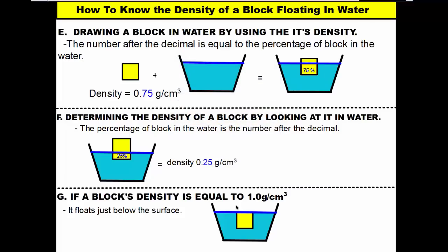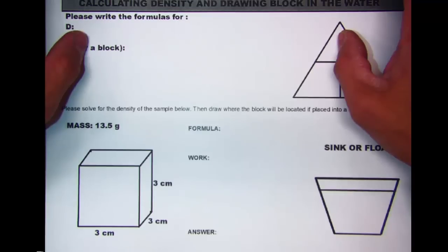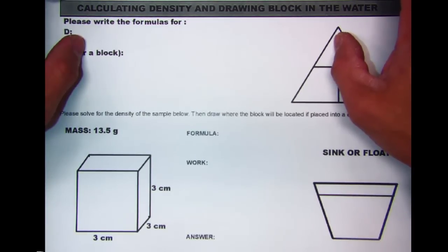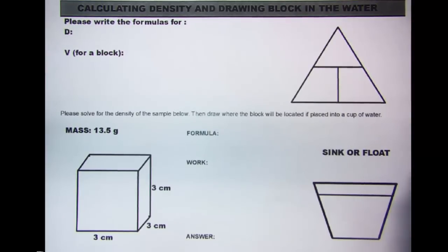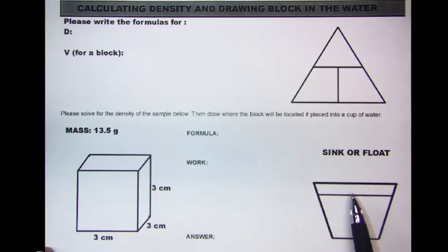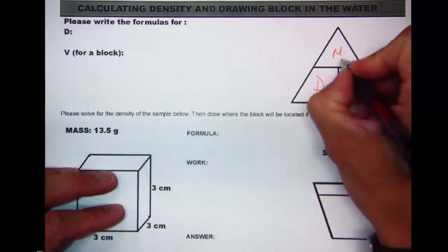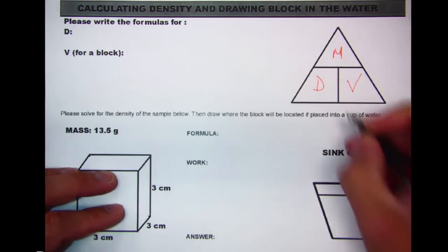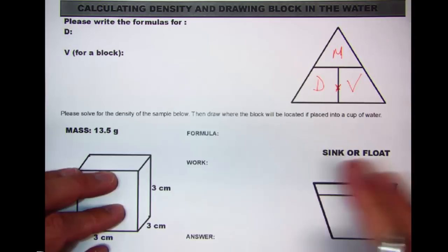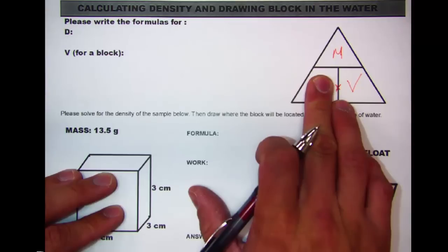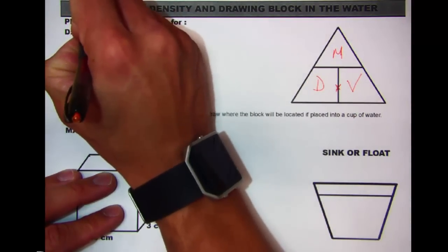Let's move on and finish the vodcast by calculating the density of an object and drawing it in a cup of water. We're going to solve for density of a block, decide whether it sinks or floats, and if it floats, how much of the block is in the water. Fill out the DMV triangle — mass always goes at the top because it's always in the numerator — and don't forget the multiplication sign. The block has three given dimensions, so we'll use length times width times height for volume.